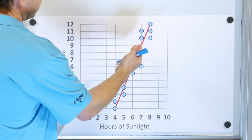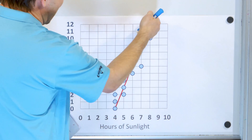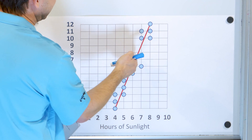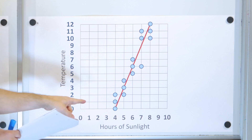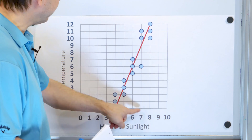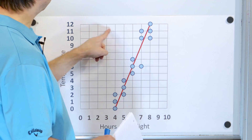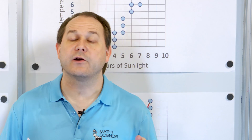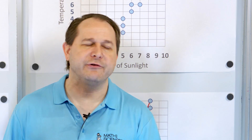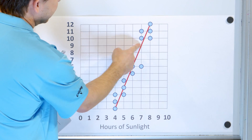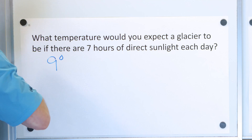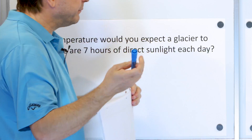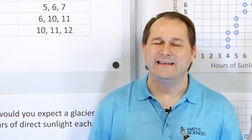We want to draw a line of best fit through this data — the line can't be on one side, it has to go through the data with roughly equal aggregate distance of points on both sides. At seven hours, we recorded six, ten, and eleven degrees of temperature across the three glaciers. On average, using the line of best fit, the line passes through about nine degrees at seven hours — so we expect a nine degree temperature. Some data points will be above and below, but on average that's what the data is telling us.